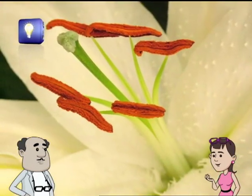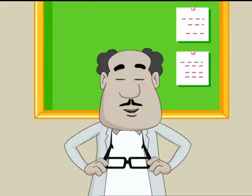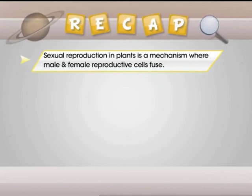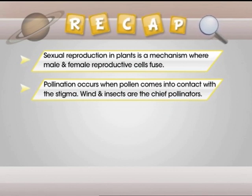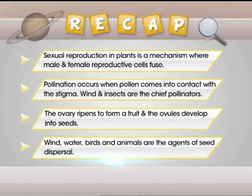I need to learn some tricks from the plants! Friends, time for us to go down memory lane and revise what we learned today. Sexual reproduction in plants is a mechanism where male and female reproductive cells fuse. Pollination occurs when pollen comes into contact with the stigma. Wind and insects are the chief pollinators. The ovary ripens to form a fruit, and the ovules develop into seeds. Wind, water, birds, and animals are the agents of seed dispersal.